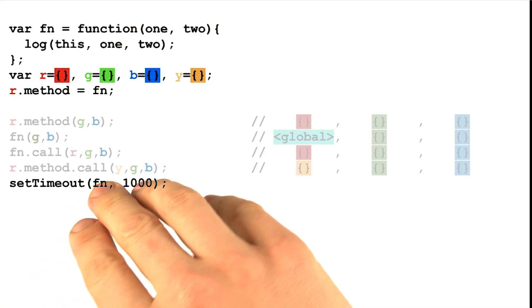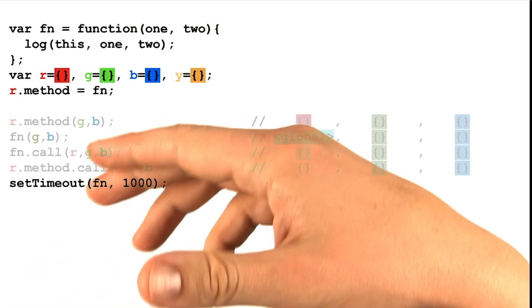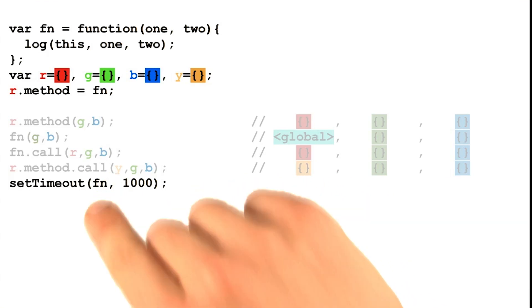One of the most confusing things for a lot of people about the parameter this is how it will get bound within functions when they get passed as callbacks.